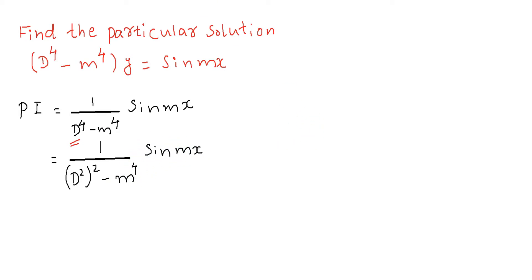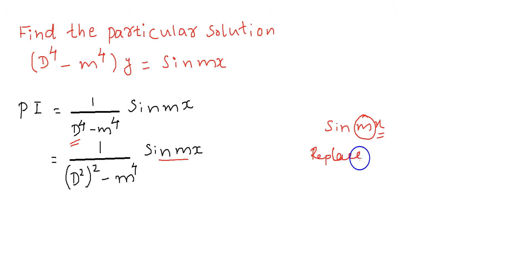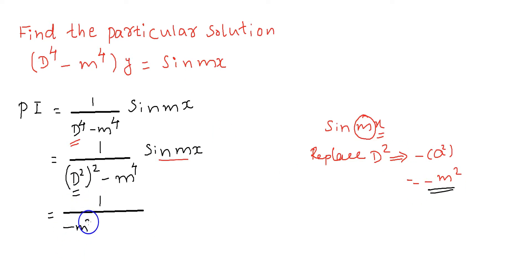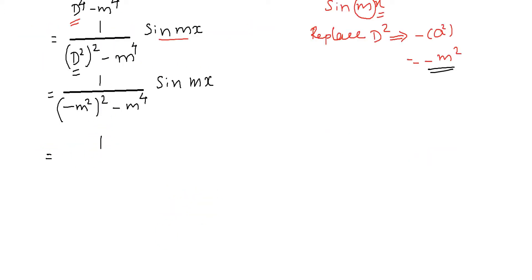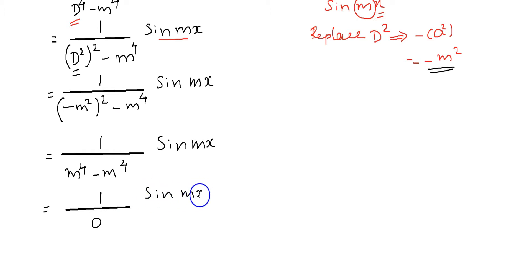Here, the given function is sin mx. The coefficient of x in sin mx is m. So we replace d squared in the denominator with negative of m squared. Then 1 by (d squared) whole square minus m raised to 4 becomes 1 by (minus m squared) whole square minus m raised to 4, which equals 1 by m raised to 4 minus m raised to 4 into sin mx. That gives the denominator 0, making it an indeterminate form.